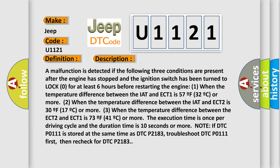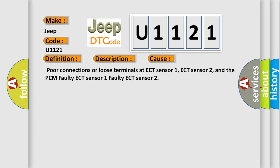Note: if DTC P0111 is stored at the same time as DTC P2183, troubleshoot DTC P0111 first, then recheck for DTC P2183. This diagnostic error occurs most often in these cases: poor connections or loose terminals at ECT sensor 1, ECT sensor 2, and the PCM; or a faulty ECT sensor 1 or ECT sensor 2.